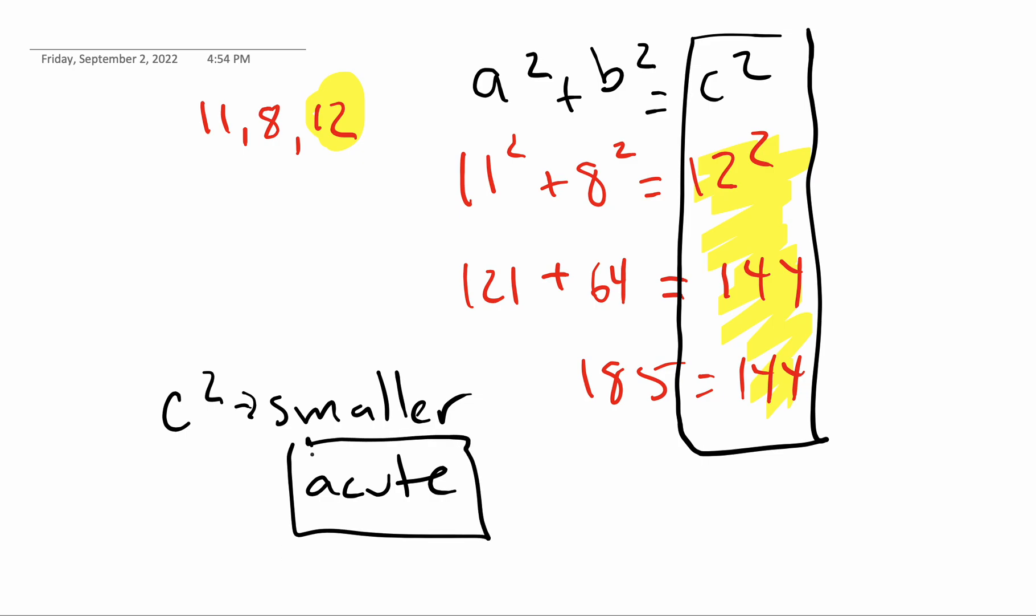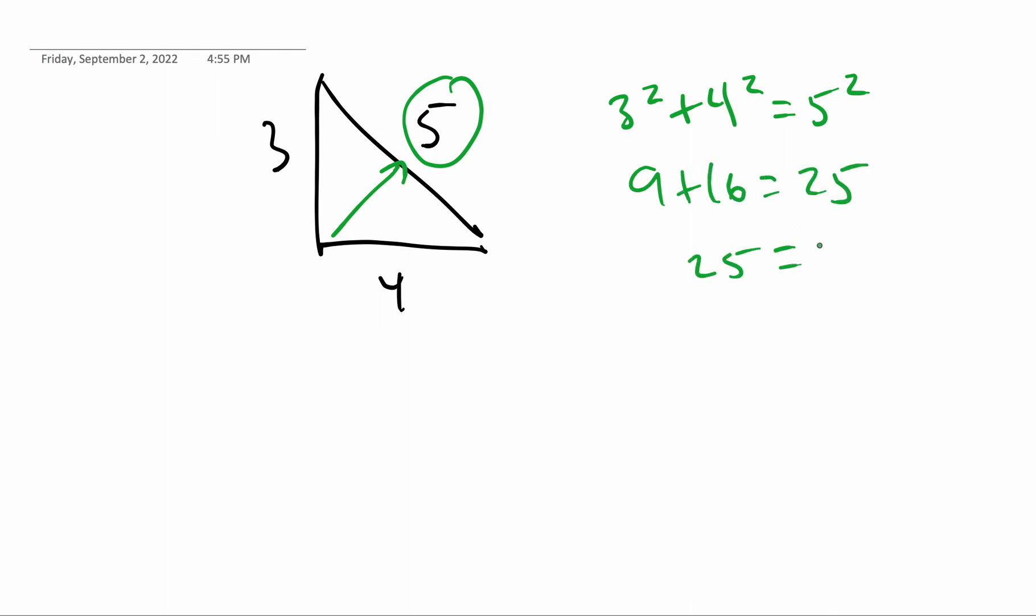And so finally, we have when they're equal. So let's draw a picture on this one and do a 3, 4, 5. Our hypotenuse is across from what looks like the right angle. It's the biggest number. 3 squared plus 4 squared equals 5 squared. So 9 plus 16 equals 25. 25 equals 25.